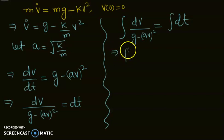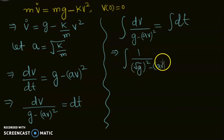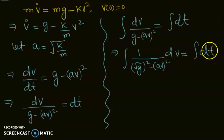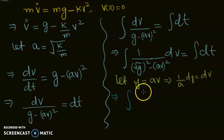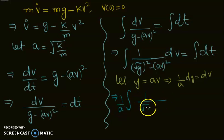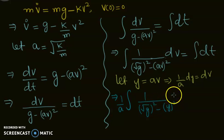This can be written as ∫ 1/√(g² - (av)²) dv = ∫ dt. Further, let y = av, which implies dv = (1/a)dy. So we get (1/a) times ∫ 1/√(g² - y²) dy on the left-hand side.